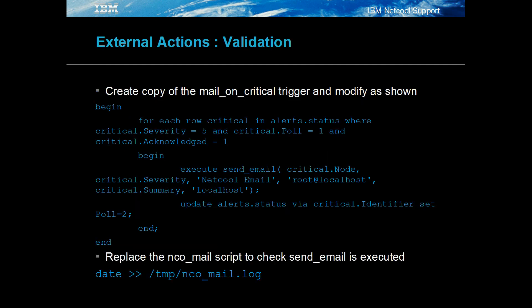The external action functionality can be checked using a copy of the mail on critical trigger. In the trigger, update the condition to check for poll being 1 and the event being acknowledged. Once the event is actioned, set poll equal to 2.